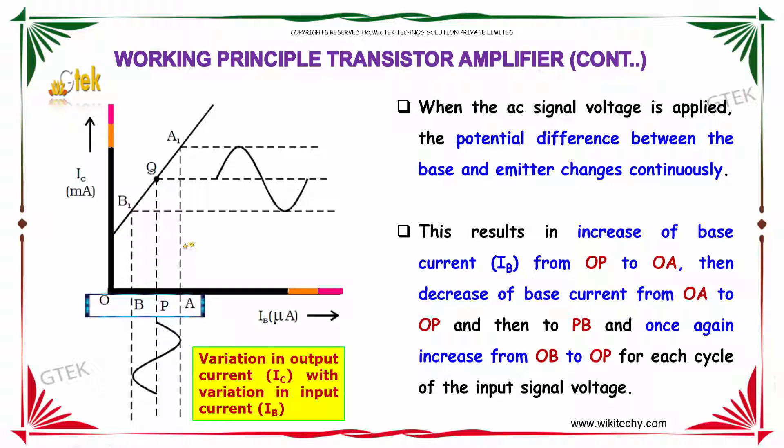Then the decrease of the base current from OA to OP and then to PB once again. So there is a cyclic waveform appear.